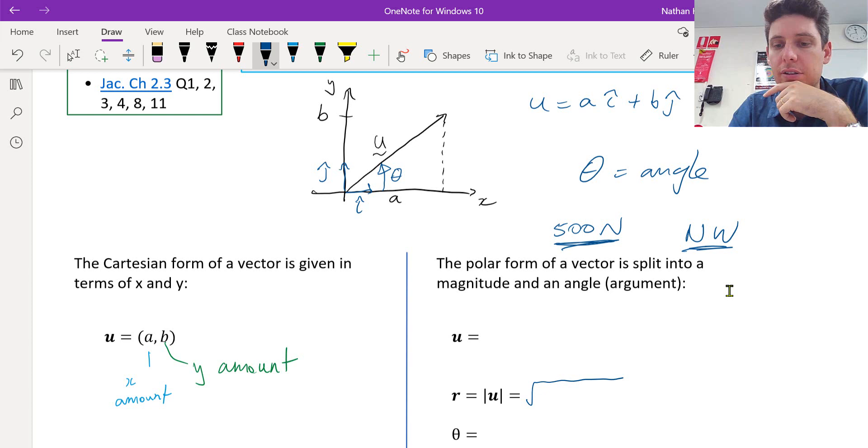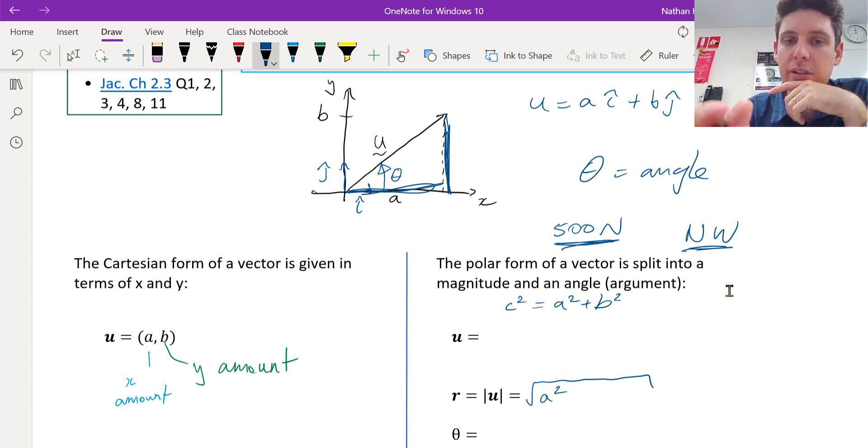We need to use Pythagoras. So c squared equals a squared plus b squared. So the magnitude is going to be the square root of a squared, which is the x length here, plus b squared. And the square root of those two sum together. And we get the magnitude, the hypotenuse of that vector.